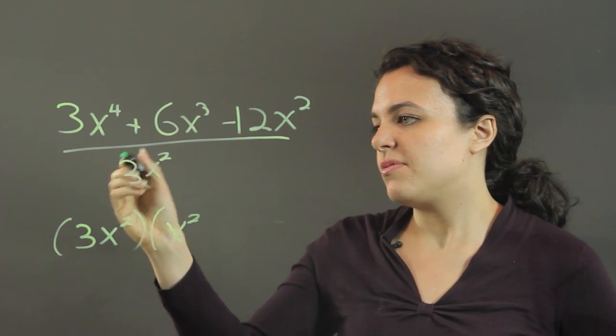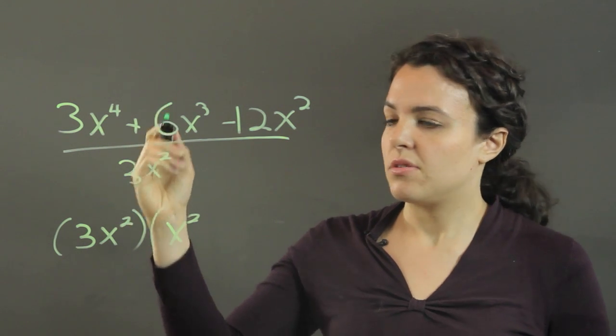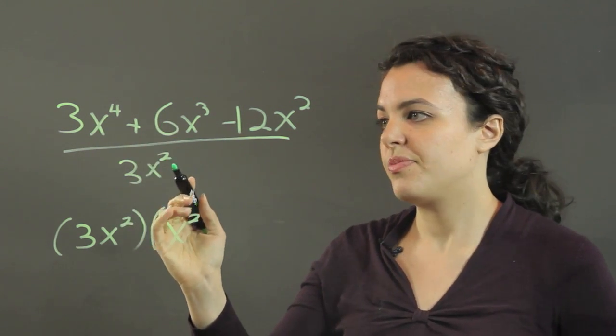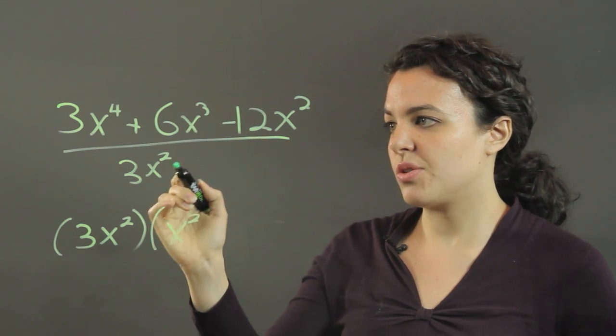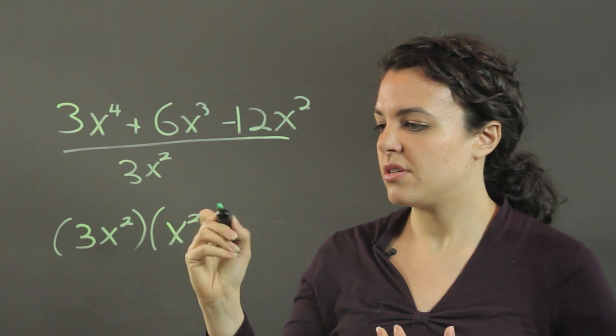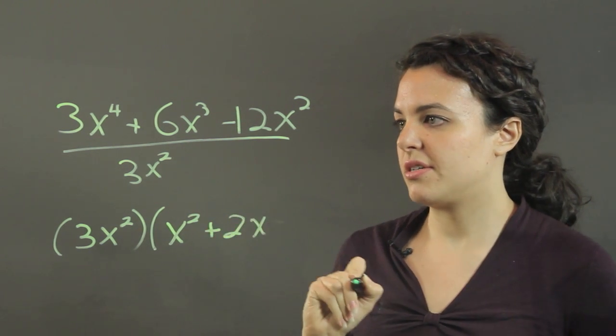6x cubed over 3x squared, the 6 over 3 goes to 2, and x cubed over x squared is just x. So I have plus 2x.